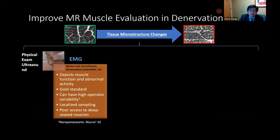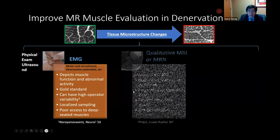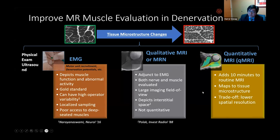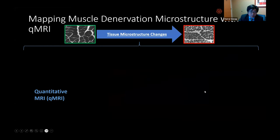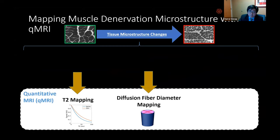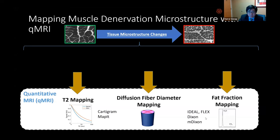On improving MRN muscle evaluation, focusing on muscle denervation: electrodiagnostic exams such as EMG depict muscle function and abnormal activity. Qualitative MR neurography, as Dr. Sneeg mentioned, can be used as an adjunct to electrodiagnostics, evaluating both nerve and muscle qualitatively but not quantitatively. We add a 10-minute set of quantitative sequences to our standard MRN exam providing tissue microstructure mapping: T2 mapping (water edema extent), apparent fiber diameter mapping (microstructural muscle atrophy), and fat fraction mapping.